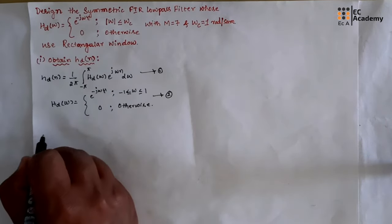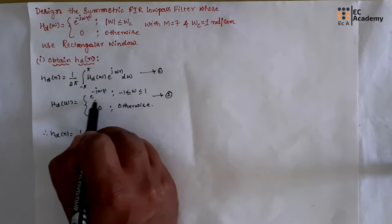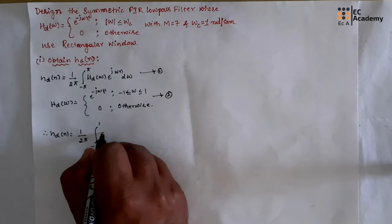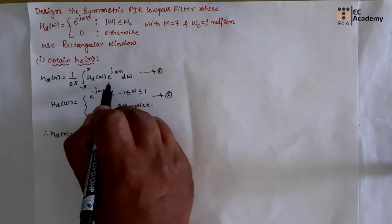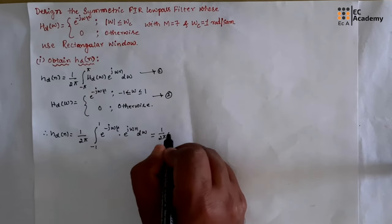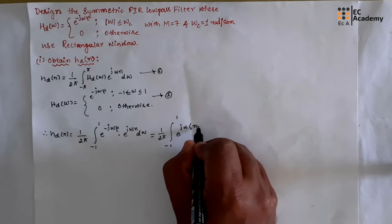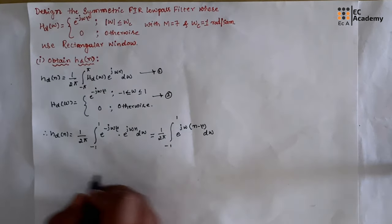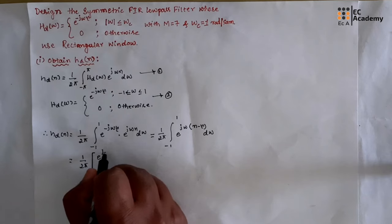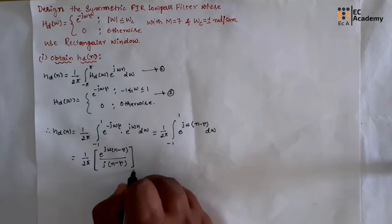Using equation 2 in equation 1, we write hd(n) = (1/2π) ∫ from −1 to 1 of e^(−jωτ) · e^(jωn) dω. We can write this as (1/2π) ∫ from −1 to 1 of e^(jω(n−τ)) dω. Integrating gives (1/2π) · [e^(jω(n−τ)) / (j(n−τ))] evaluated from −1 to 1.